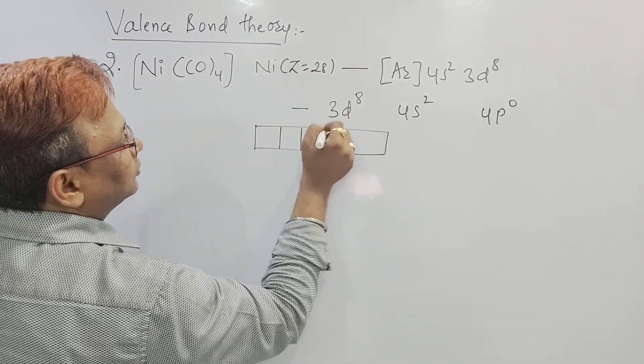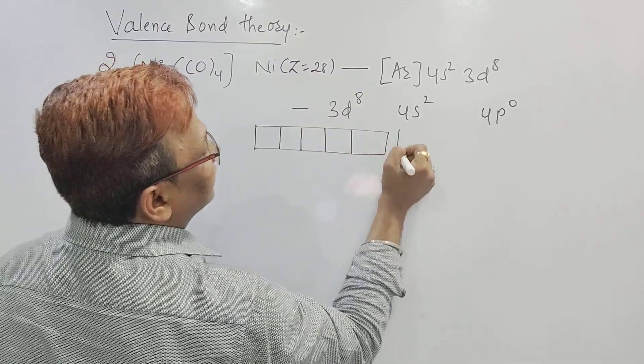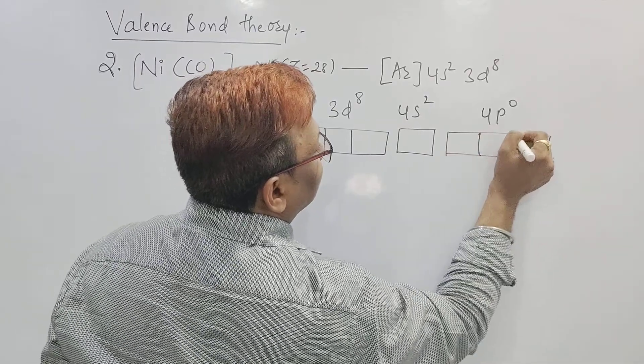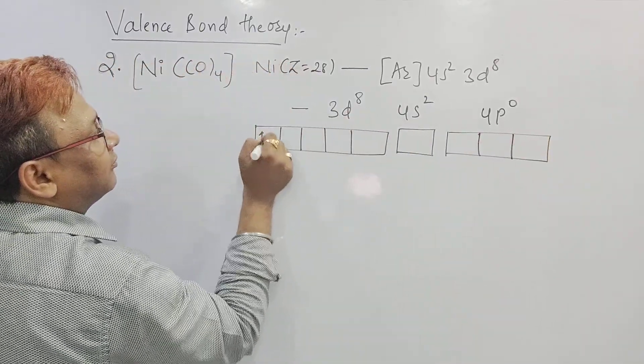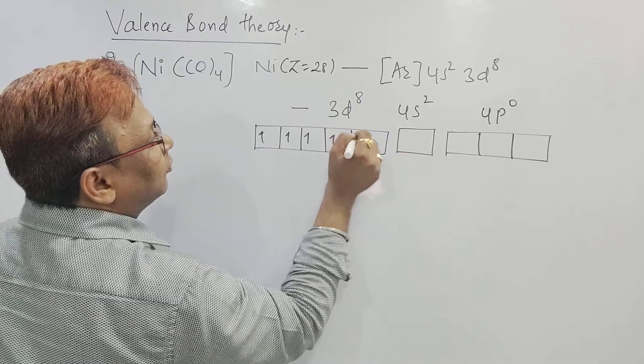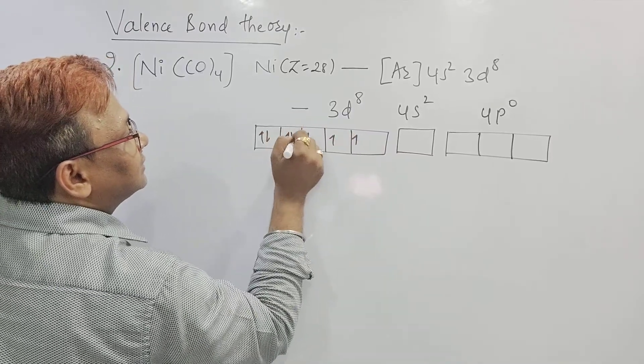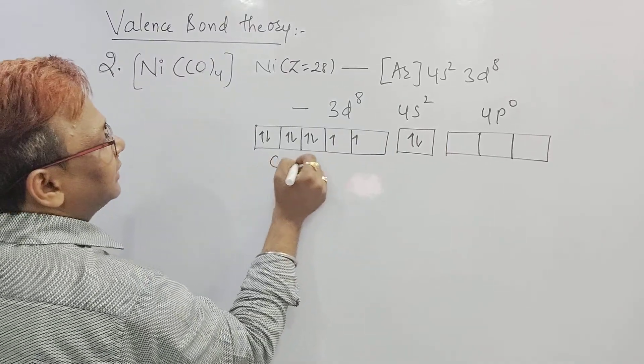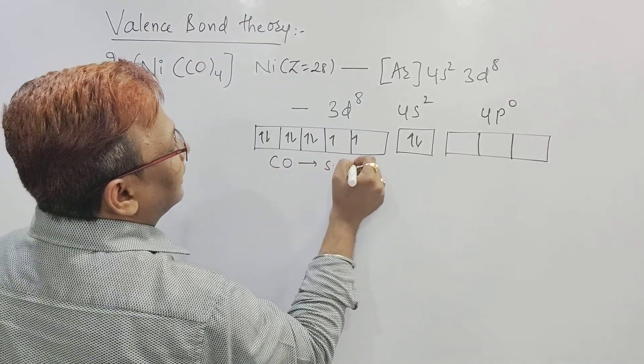In increasing order, it is 3d8, 4s2. And then if you require you can write 4p0 and 4d0. 3d8 means make the 5 degenerate boxes for 3d. 1, 2, 3, 4, and 5. This is the s orbital. And this one is the p orbital. Now how many are there? 8. 1, 2, 3, 4, 5, 6, 7, 8. s is having 2.